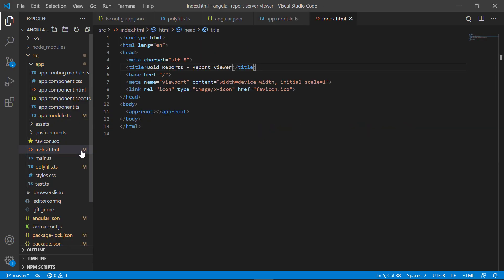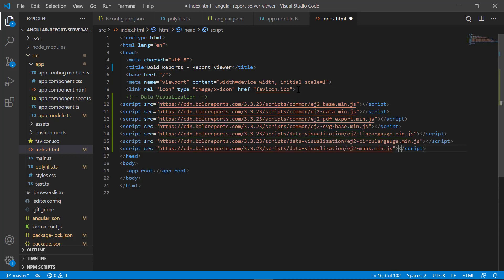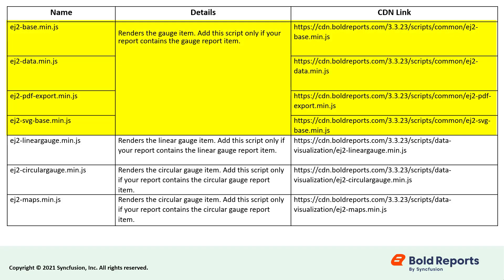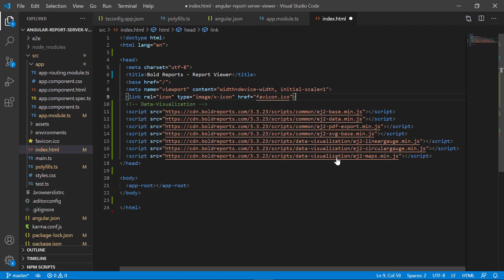Let's see how to reference the scripts in the Angular application. Open the index.html file from the src folder and reference the scripts in the head tag. ej2-base.min.js, ej2-data.min.js, ej2-pdf-export.min.js, and ej2-svg-base.min.js are used to render the gauge item. ej2-lineargauge.min.js renders the linear gauge report item. ej2-maps.min.js is used to render the map report item. Save the file.